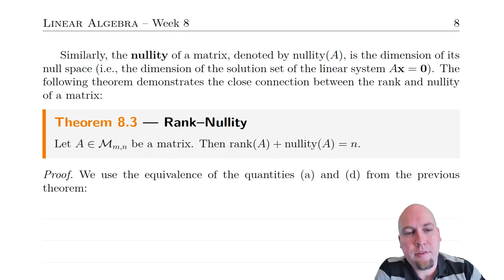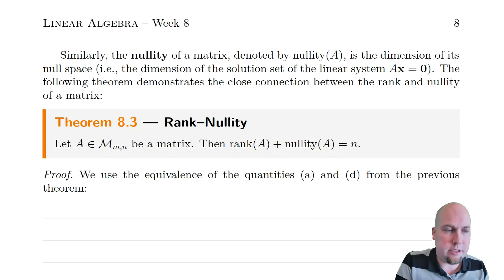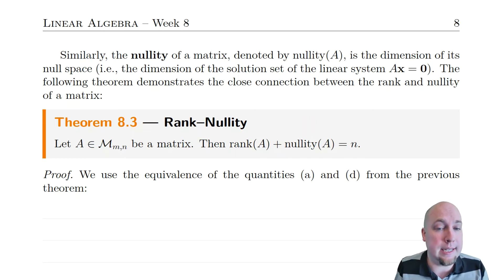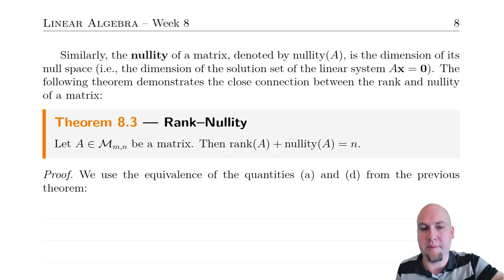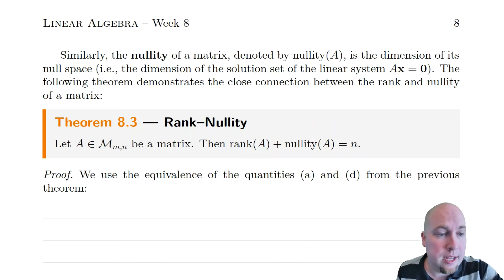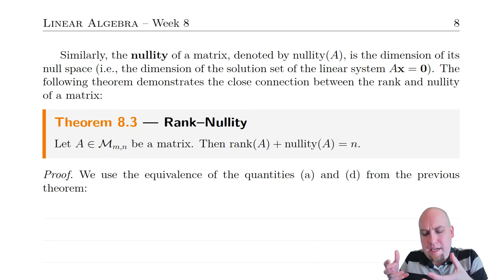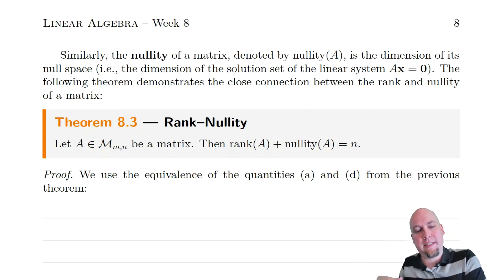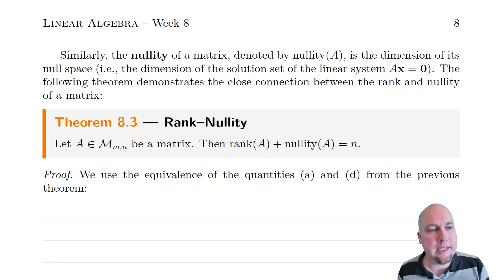Time for our big theorem for today's class. It captures the fact that rank and nullity of a matrix are complementary to each other. Suppose you've got any matrix A, and the important number here is n — how many columns it has. For any matrix A with n columns, the rank of that matrix plus the nullity of that matrix equals n. In other words, if you add up how much non-degeneracy a matrix has with how much degeneracy it has, you always get the same number. So you can compute the rank or nullity from the other one straightforwardly.